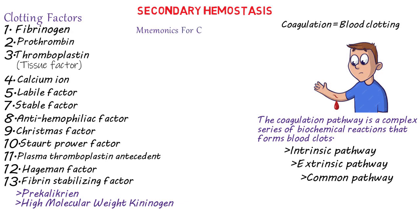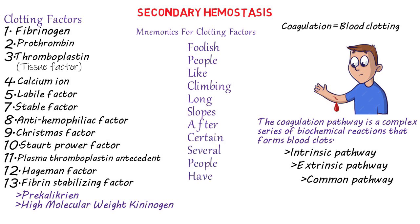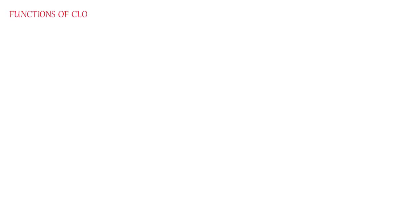The two factors without numbers assigned to them are pre-kallikrein and high molecular weight kininogen. The mnemonic to remember the clotting factors is: 'Foolish People Try Climbing Long Slopes After Certain Several People Have Fallen.' You just have to add the unnumbered factors so that none are left out.